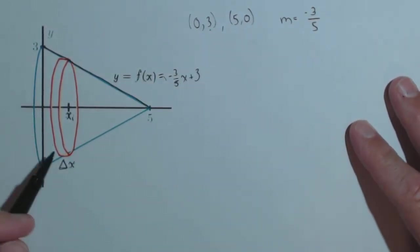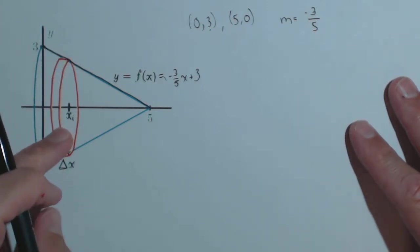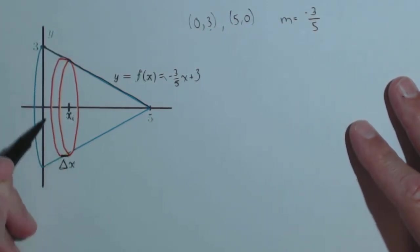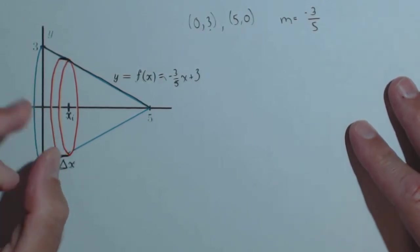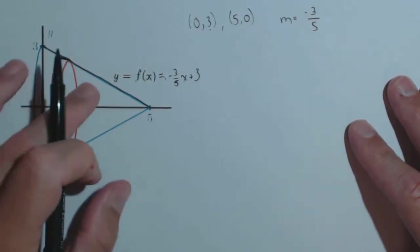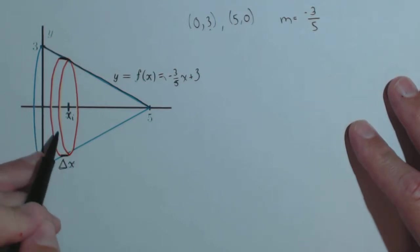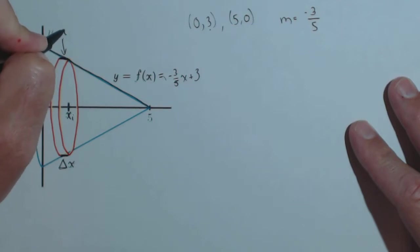Now, what we're going to do is use slicing. So here in red, you can see I have my slice, and I'm going to give it an arbitrary width of Δx. That Δx is eventually going to go to zero when we have infinitely many slices. I'm making this slice at x sub i. So this is my i-th slice.